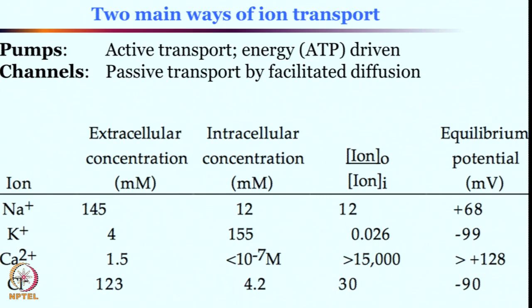Inside our cell, different metal centers are present. These metal ions could be sodium, potassium, calcium, or other anions such as chloride. If you notice, extracellular and intracellular concentrations are completely different. Outside, sodium is present in large concentration, but inside it is present in very low concentration. On the other hand, potassium outside is present in very little amount, but inside the cell it is in quite a high amount.